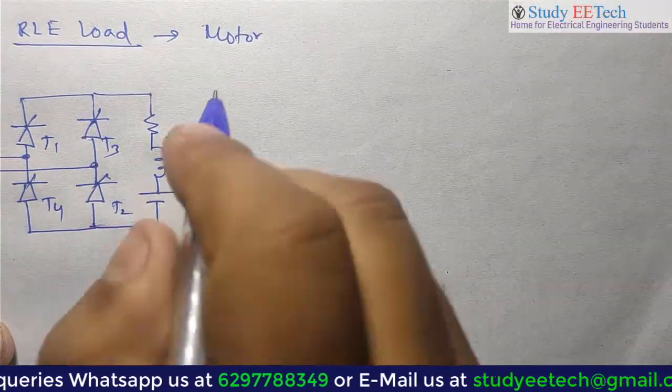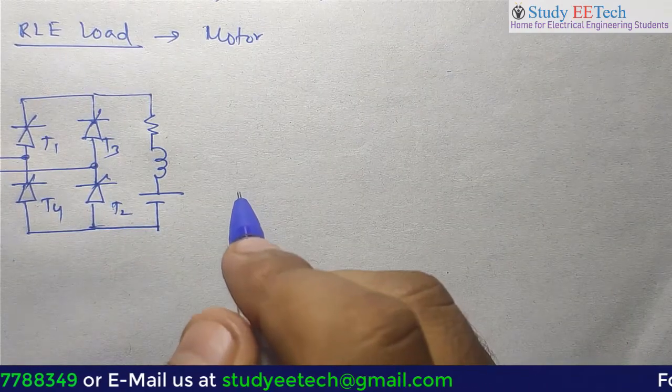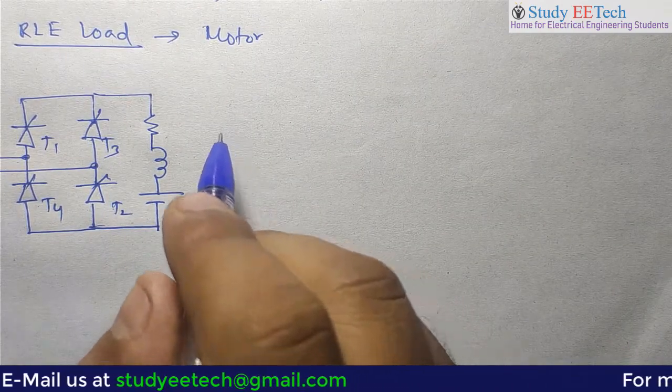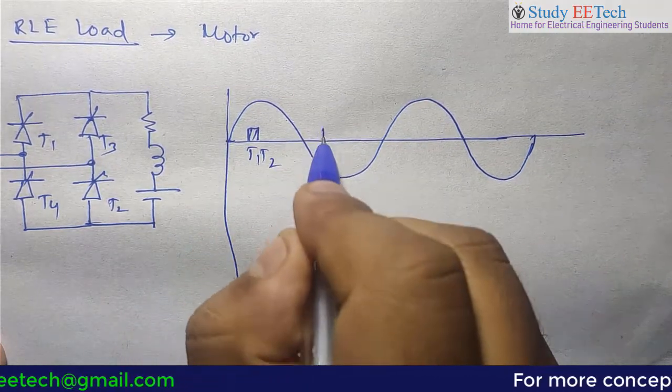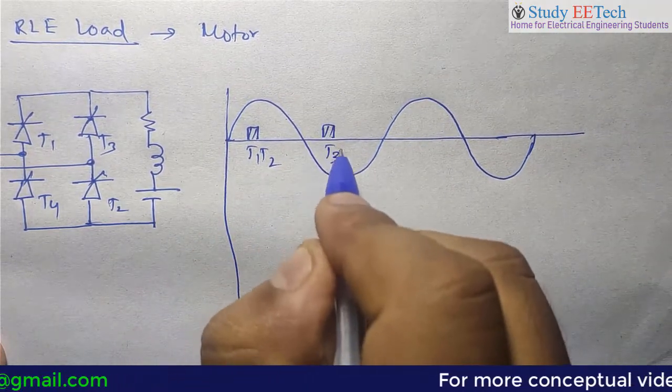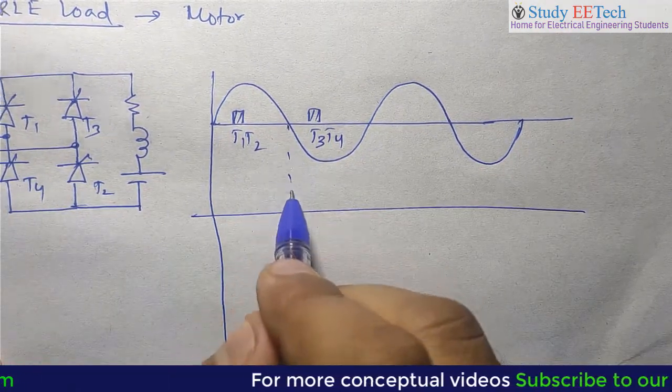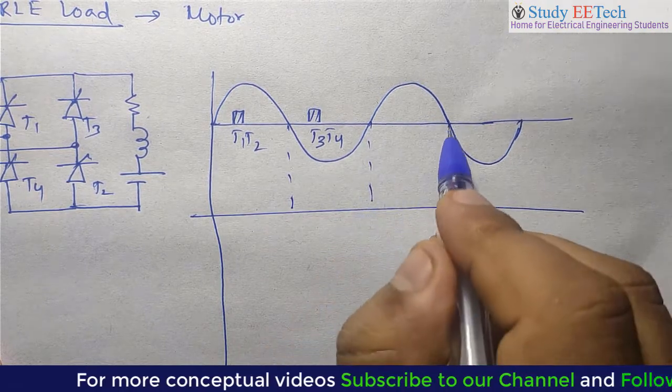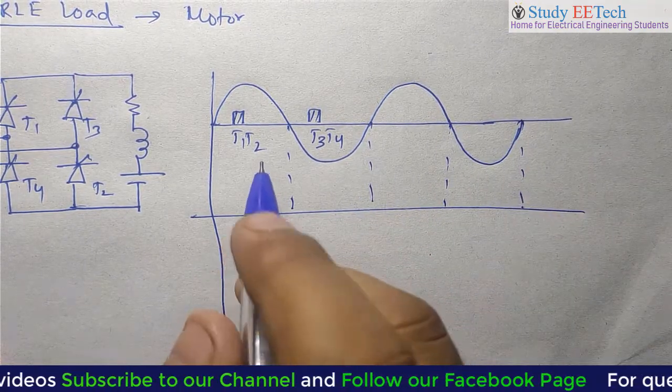Now we will draw the waveform here and through the waveform we will understand the operation of the circuit. T1, T2 triggered here, T3, T4 is triggered here. We see this point is pi, this point is 2pi, 3pi, 4pi and so on.